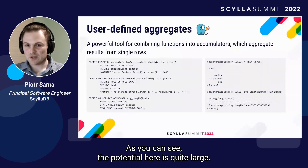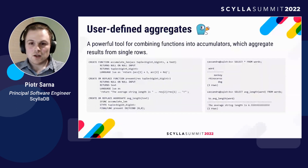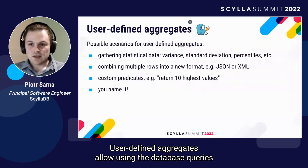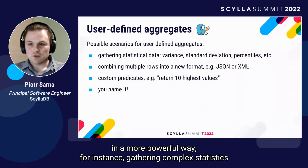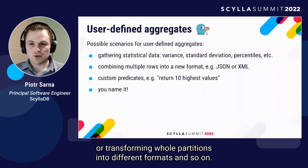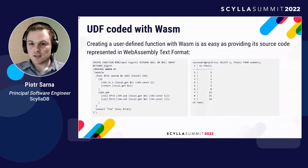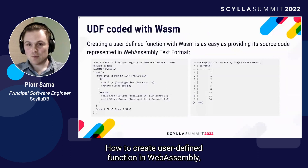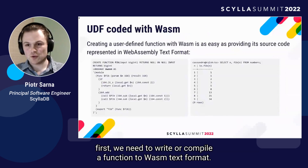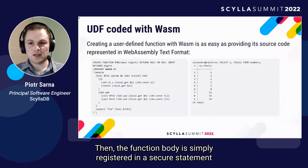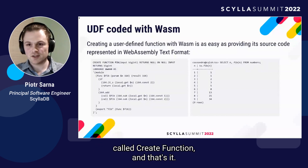As you can see, the potential here is quite large. User-defined aggregates allow using database queries in a more powerful way — for instance, gathering complex statistics or transforming whole partitions into different formats. To create a user-defined function in WebAssembly, first write or compile a function to WASM Text Format, then register the function body in a CQL statement called CREATE FUNCTION, and that's it.